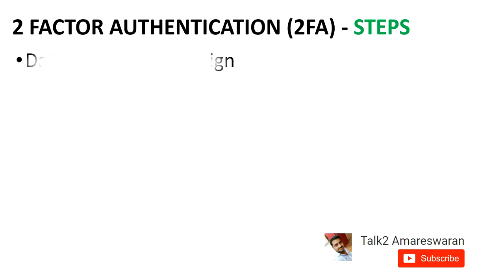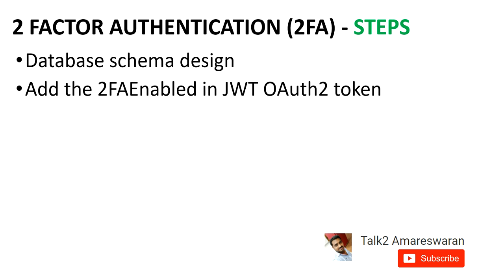In this course, I am going to teach you the step-by-step procedure on how to develop the two-factor authentication system. The first step is database schema design changes — what database tables and columns we need to develop the two-factor authentication. And then, while generating a JWT OAuth token, we need to add whether 2FA is enabled or not for that user.